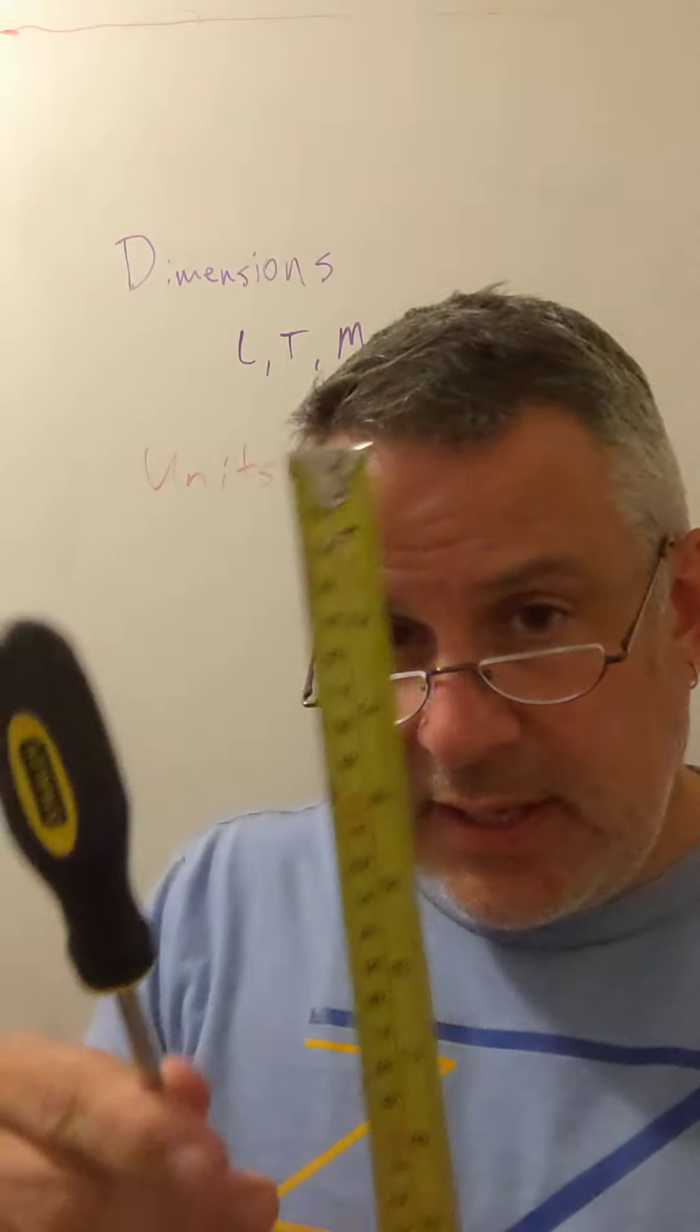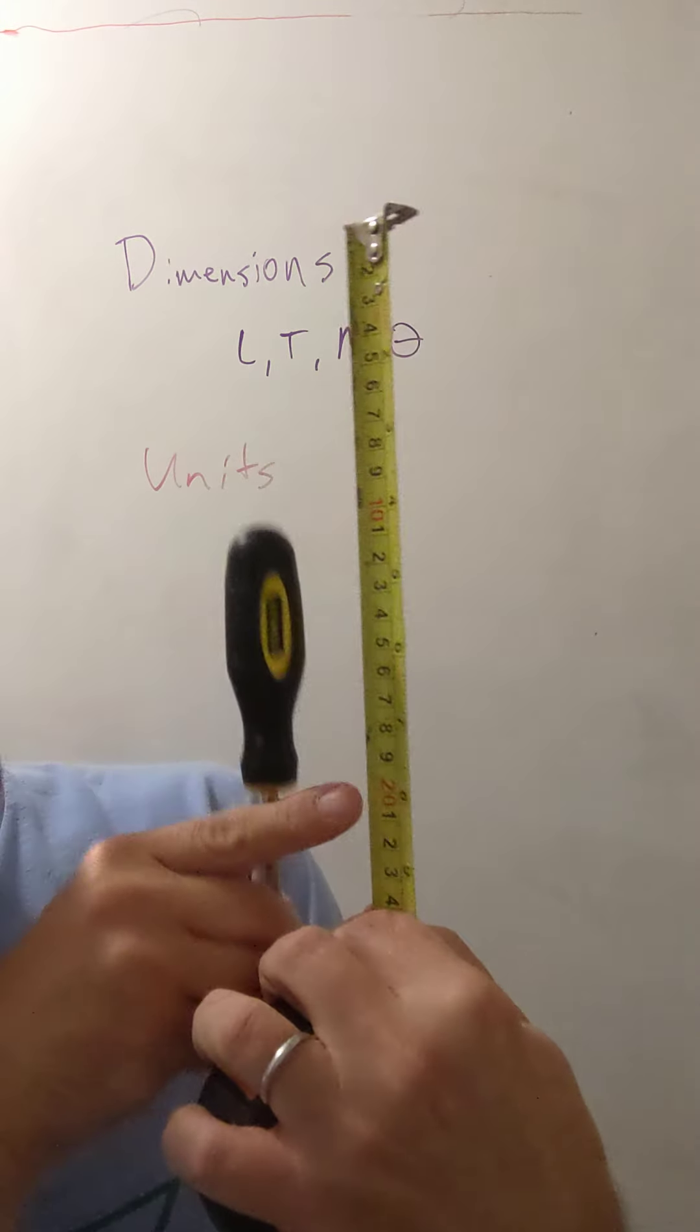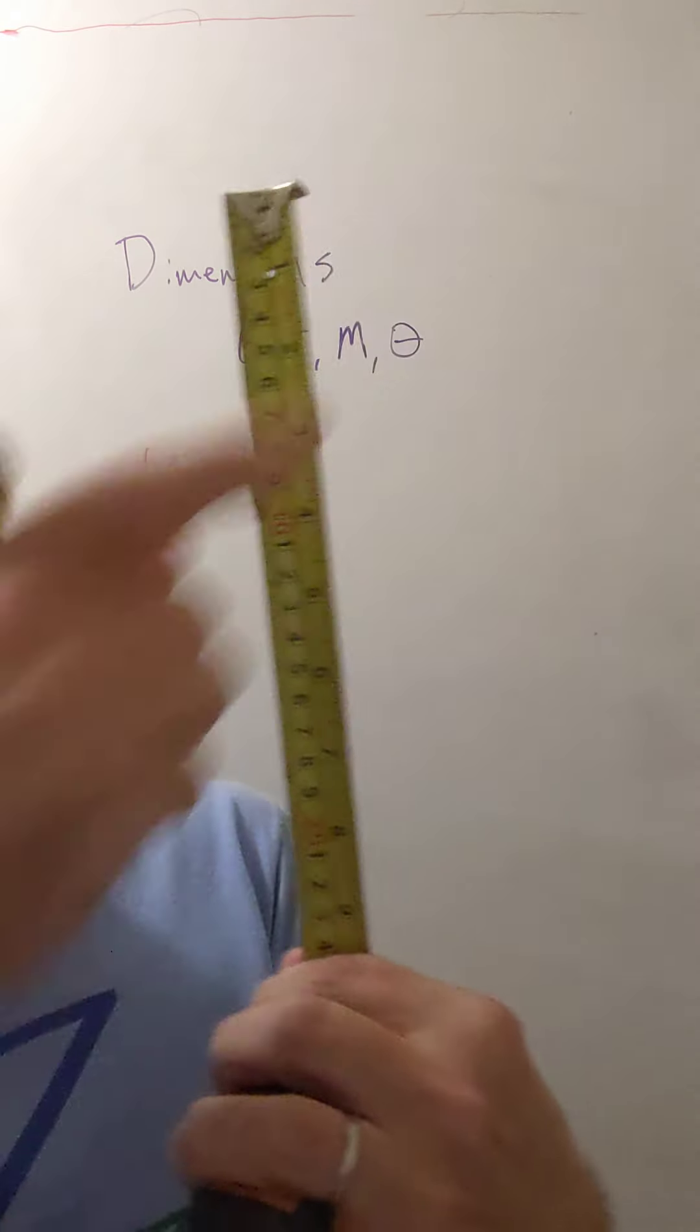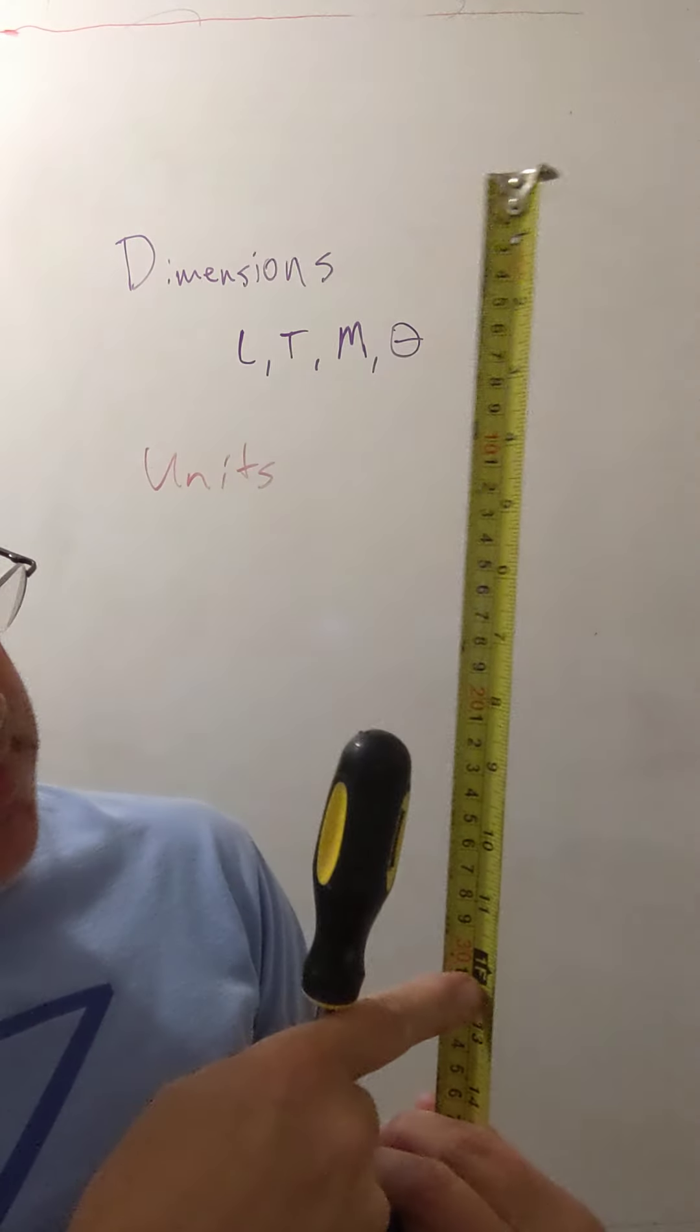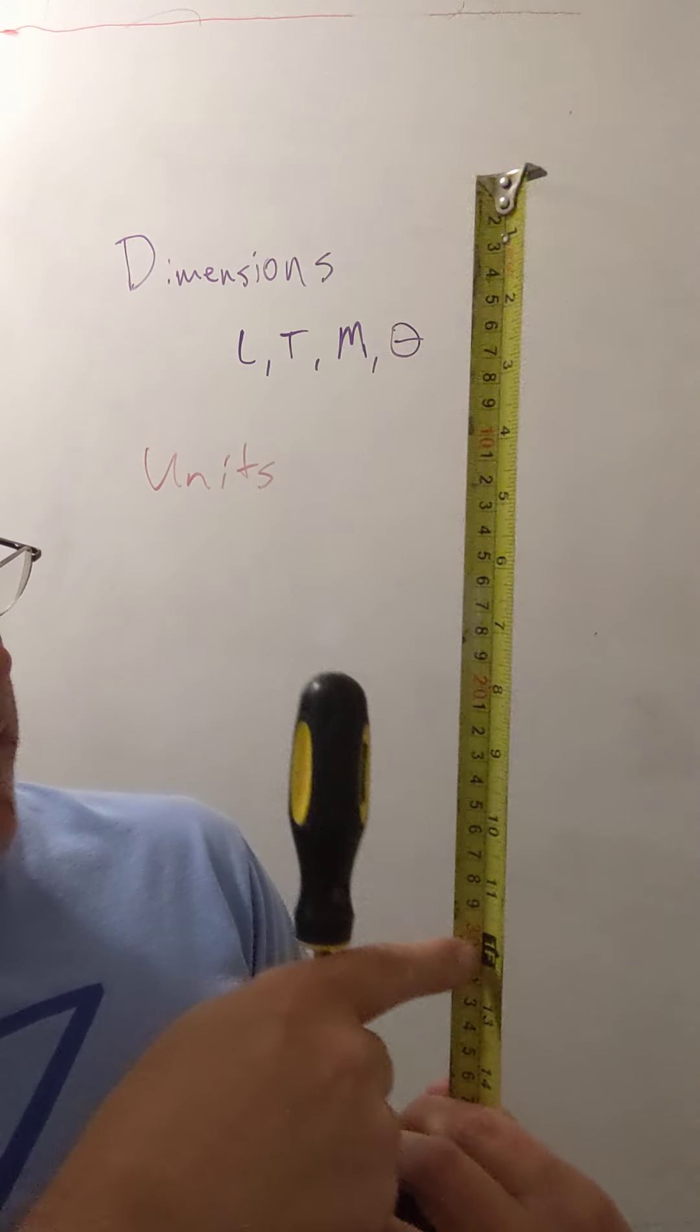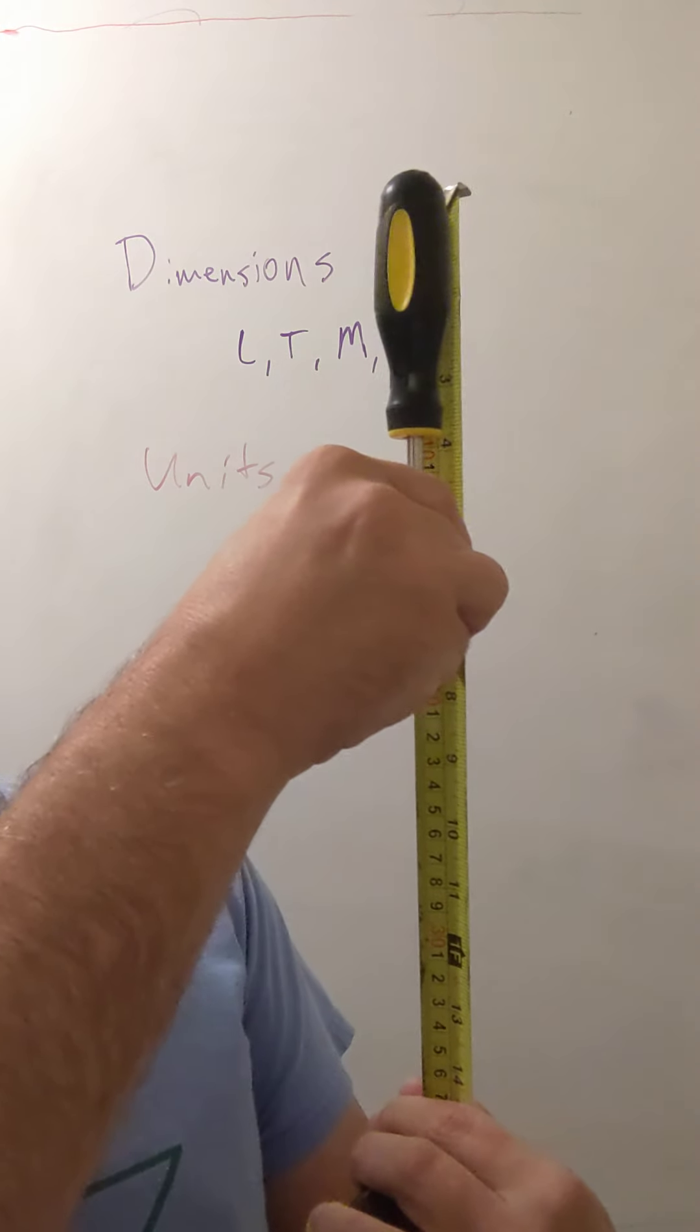So if I take out my measuring tape and measure this, it's about, this side is measured in centimeters, it's about 20 centimeters long, or this side is measured in inches, it's about 8 inches long. Or if I stretch down, I actually can see feet. So 8 out of 12 is 2 divided by 3, so 2 thirds of a foot.